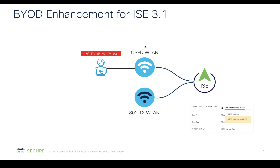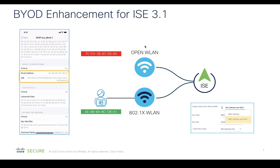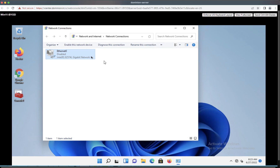From ISC 3.1 onwards, the certificate provisioned to the endpoint not only contains the MAC address but also contains the GUID, so that you can track the endpoint not based on the MAC address alone but with a unique parameter called GUID from the context visibility. Let's now onboard an endpoint.